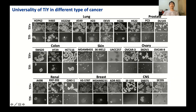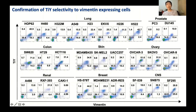Surprisingly, TiY-positive cells showed higher in vitro sphere-forming ability in all tested cancer cell lines compared to unsorted control and TiY-negative cells — suggesting their potential as a universal TIC-specific probe. Consistent with the target identification data, TiY-positive cells in all tested cell lines showed higher expression levels of Vimentin compared to TiY-negative cells, as shown by dual staining with TiY and an antibody for Vimentin protein.